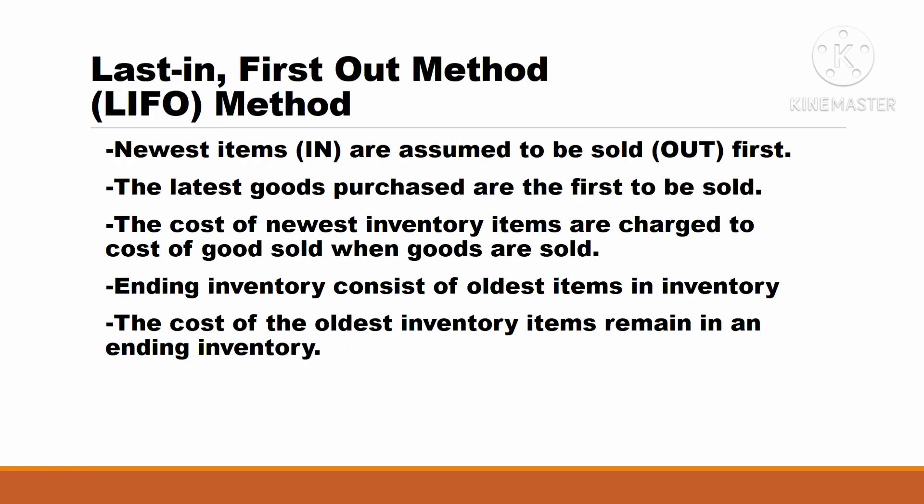The second method is the Last-In First-Out method, or LIFO method. The newest items are assumed to be sold first — the latest goods purchased are the first to be sold. The cost of the newest inventory items are charged to cost of goods sold when goods are sold. This means the ending inventory consists of the oldest items, and the cost of the oldest inventory items remains in inventory.